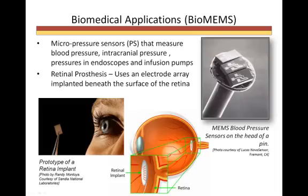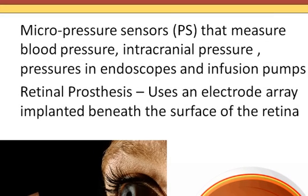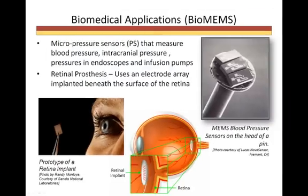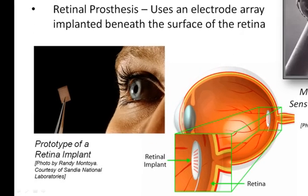The medical field is another field in which MEMS technology is exploding. We now have micropressure sensors that measure blood pressure, artery pressures, and intracranial pressures. This picture shows three blood pressure sensors on the head of a pen. Another biomedical application that has been approved by the FDA is the artificial retinal implant. The artificial retina is a microsized, electro-studded array placed on or beneath the surface of the retina. The electrode array is designed to convert light to electronic pulses which, just like in the workings of the eye, travel to the optic nerve and then to the brain.